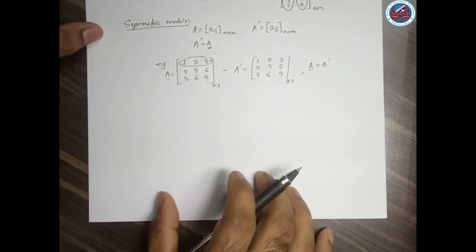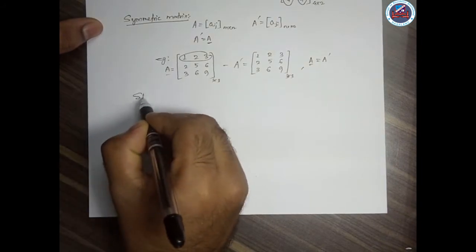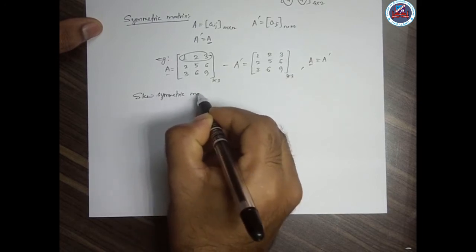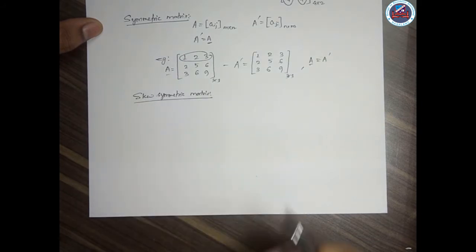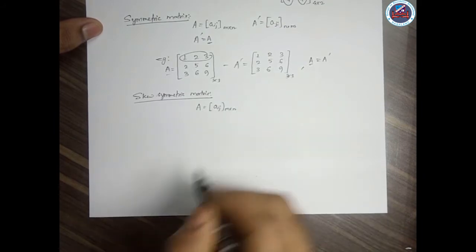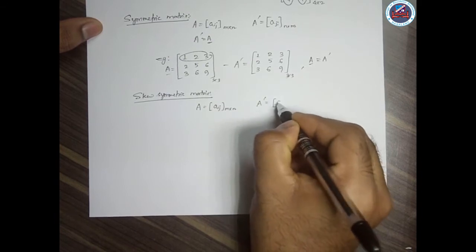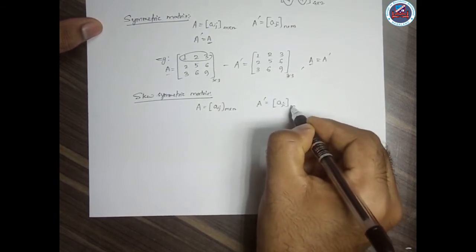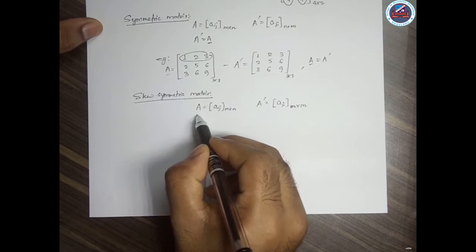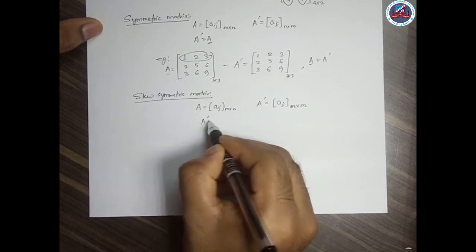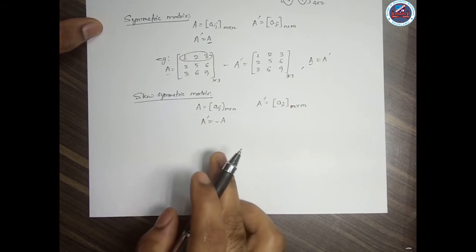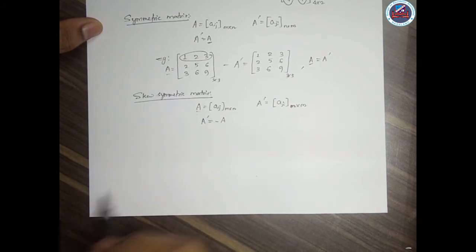Next we have skew symmetric matrix. Given matrix A of order m by n with transpose A_ji of order n by m, matrix A is called skew symmetric only if A transpose equals minus A.